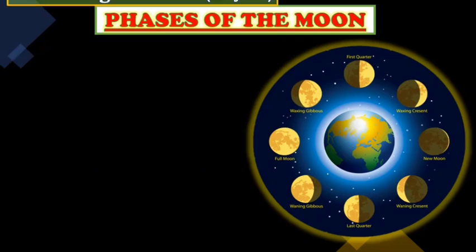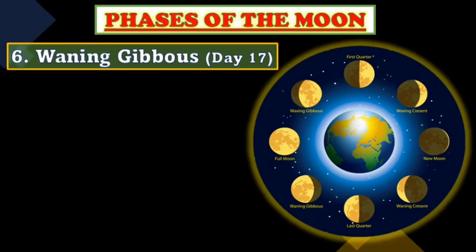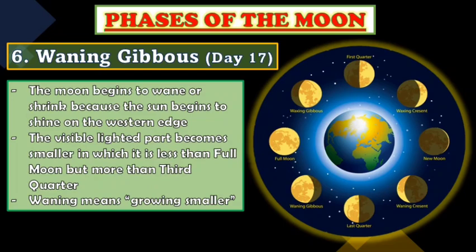Next is the Waning Gibbous on day seventeen. The Moon begins to wane or shrink because the Sun begins to shine on the western edge. The visible lighted part becomes smaller — it is less than the full moon but more than the third quarter. Waning means growing smaller.